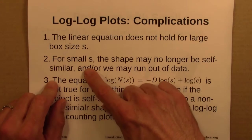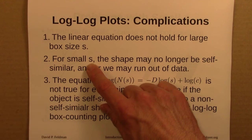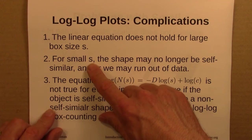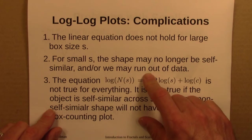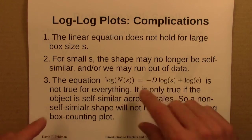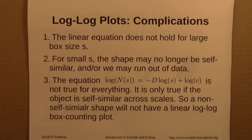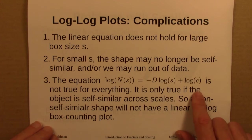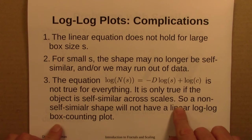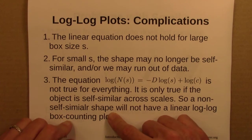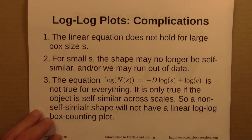However, for small s, which is where mathematically we would expect it to be truest, computationally and practically that's the hardest to work with. We may run out of data, and or the shape itself may no longer be self-similar. Real fractals aren't self-similar forever. You can't zoom in forever. Also, this equation is not true for everything in the world. It's only true for processes or objects that are self-similar across scales. So a non-self-similar shape will not have a linear log-log box counting plot.